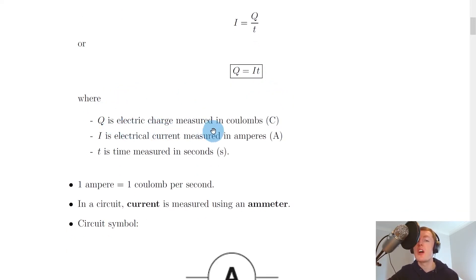So we say that Q is the electric charge measured in coulombs, I is the electrical current measured in amperes, and T is the time measured in seconds. And you should remember this equation from National 5 as well.